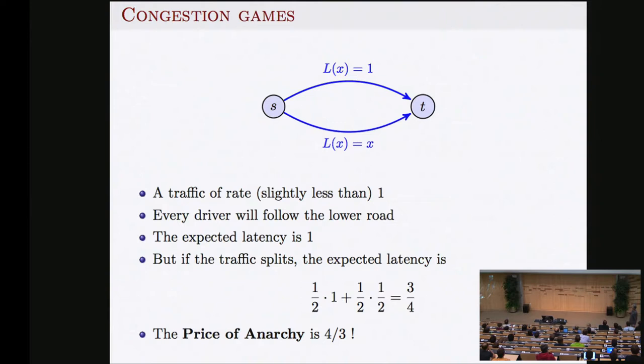Now imagine somebody controls traffic and sends half on the lower path and half on the upper path. Half will have latency one, the other half latency one-half — proportional to the traffic. The expected latency is three-quarters. So if we had somebody to control the traffic, we would lower the latency of the system. Selfishness chooses one road; a centrally controlled solution chooses both, giving expected latencies of one versus three-quarters. The price of anarchy in this case is four-thirds.